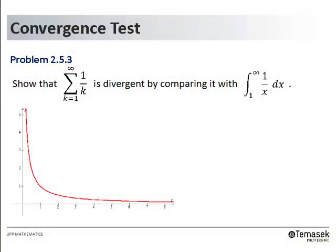We shall investigate the convergence of an infinite series. In this case, we consider the harmonic series and show that it is divergent. We shall do that by comparing it with the improper integral of 1 over x from 1 to infinity.